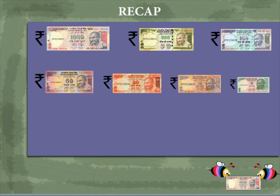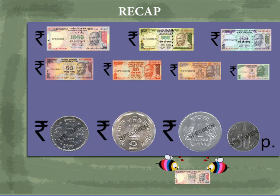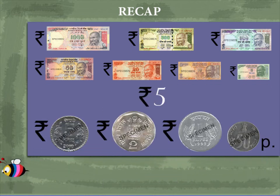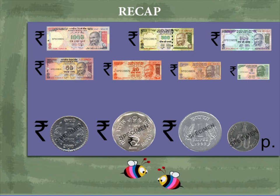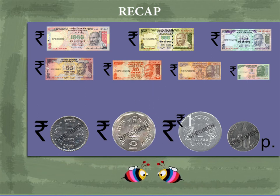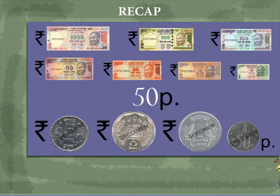Here are some coins. Here is a 5 rupee coin. This is a 2 rupee coin. This is a 1 rupee coin. And this is a 50 paise, or a half rupee coin.